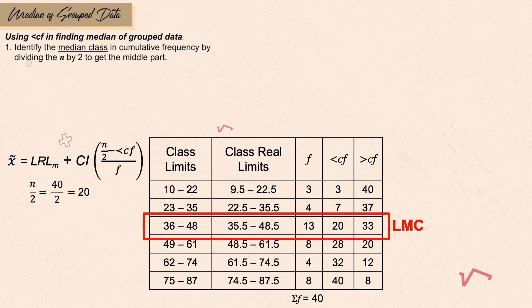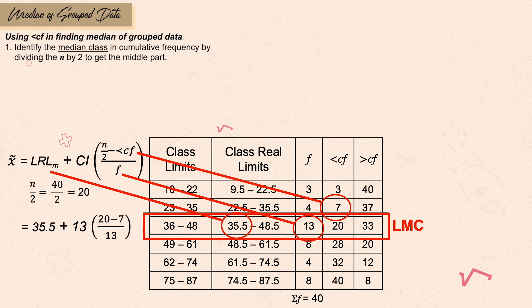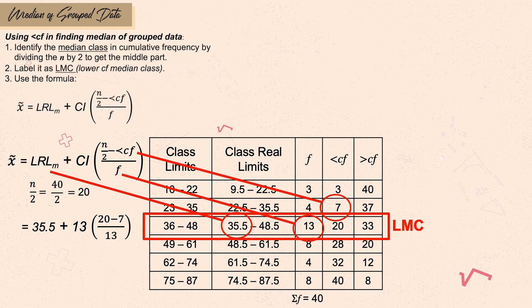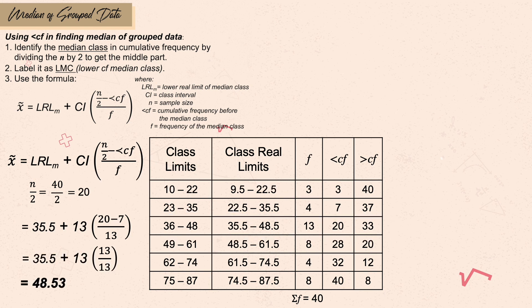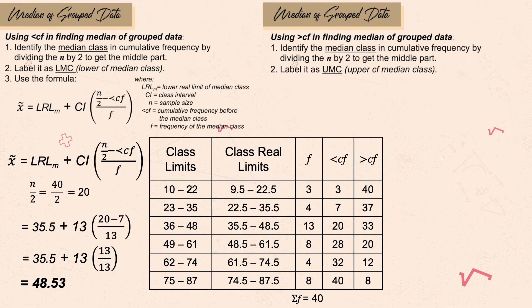From the lower median class, identify each value in the formula: l sub m is 35.5 (the lower real limit), the last cumulative frequency below is 7, and the frequency is 13. Substituting into the formula: 35.5 + 13 × (20 − 7) / 13. Solving this gives a median of 48.53.